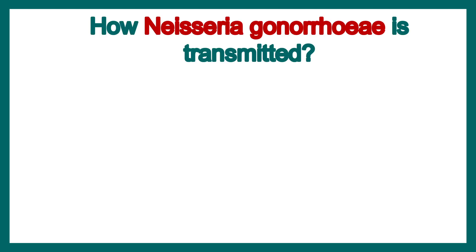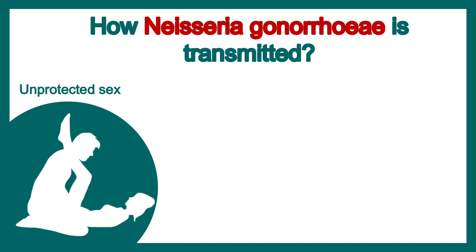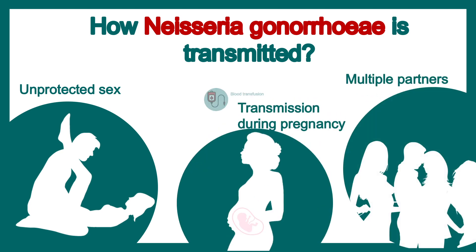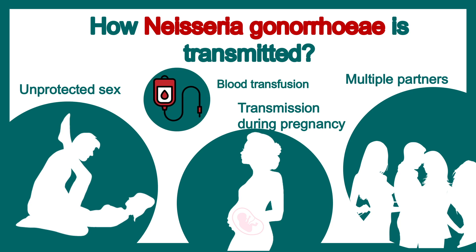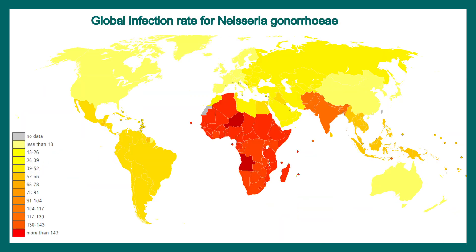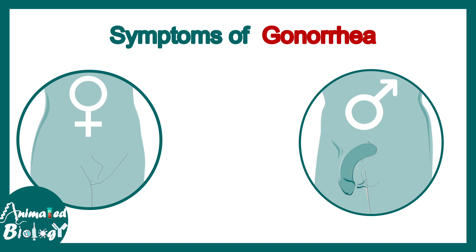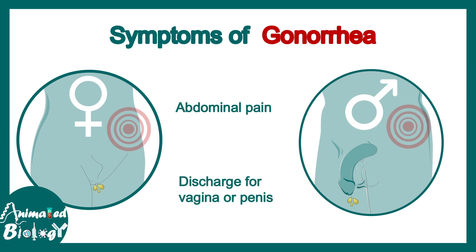Focusing on Neisseria gonorrhea — how is it transmitted? It can be transmitted via unprotected sex, multiple partners, during pregnancy, or even during blood transfusion. The incidence of Neisseria gonorrhea infection is increasing day by day throughout the world, which is pretty concerning. Symptoms of gonorrhea include abdominal pain, discharge from the penis and vagina, and painful urination.